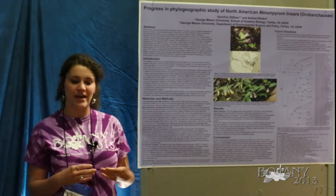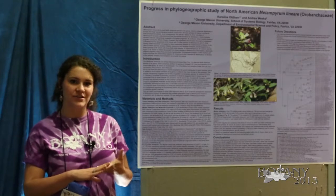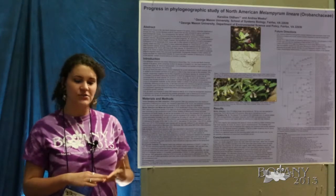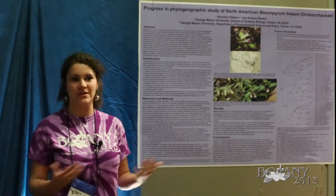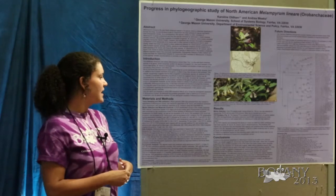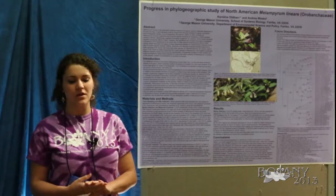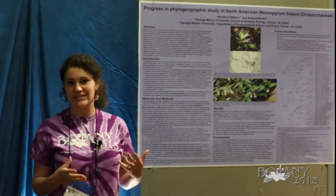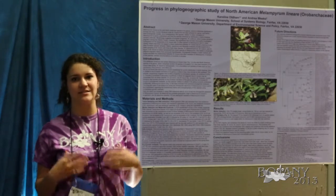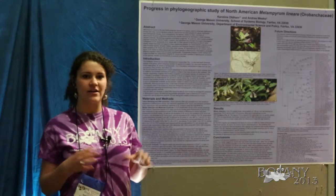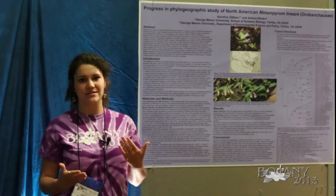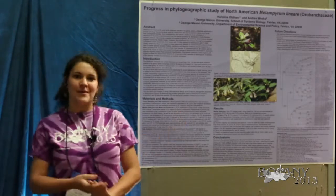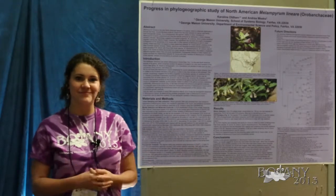Other parts of my project are looking at morphological characteristics of this species to figure out whether four varieties really are distinct varieties or whether maybe they should be combined. And then the last part is looking to get microsatellite genetic data and doing a population genetic study to see where the areas of greatest genetic diversity are, and from that inferring how it's migrated since the last glacial maximum. So three parts of the project — and there's a lot of work to be done still.